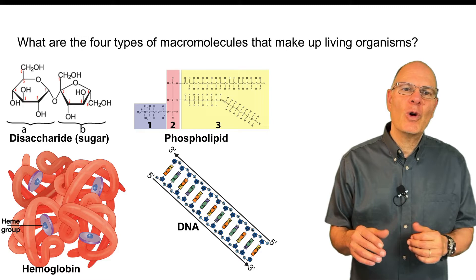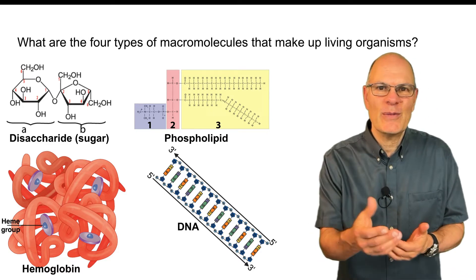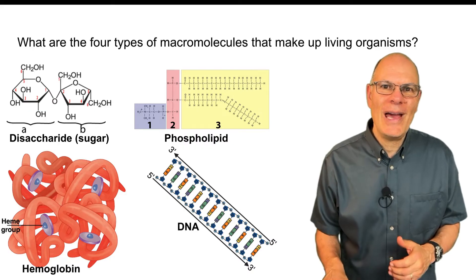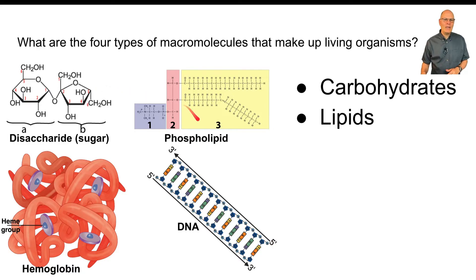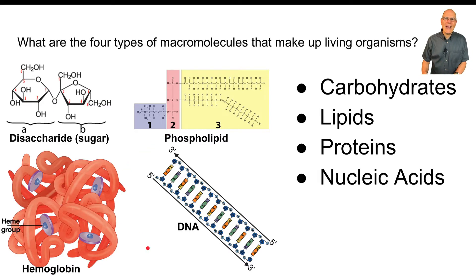So what are the four types of macromolecules that make up living organisms? What can you identify from this diagram? You have carbohydrates represented by this disaccharide, a lipid represented by a phospholipid — a key membrane molecule — a protein represented by hemoglobin, and a nucleic acid represented by DNA. Those are the big four.